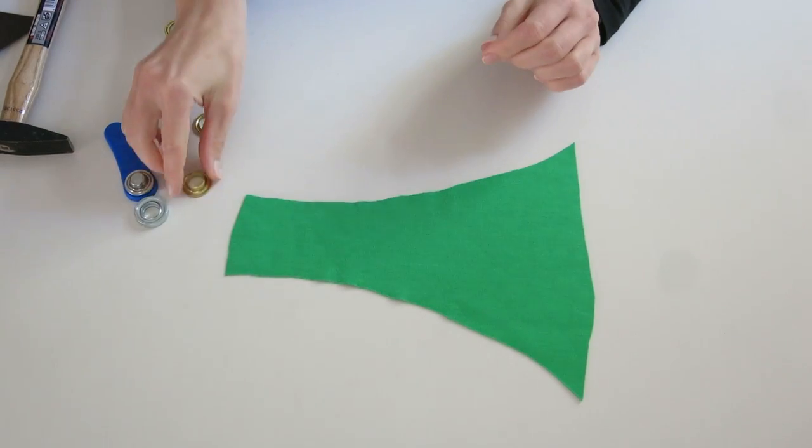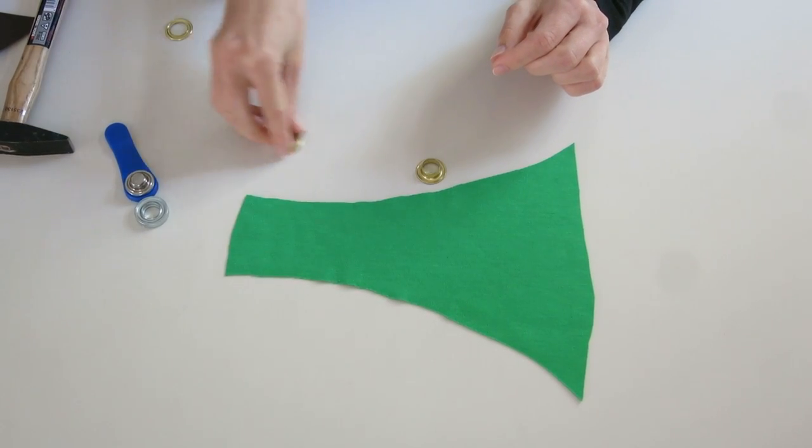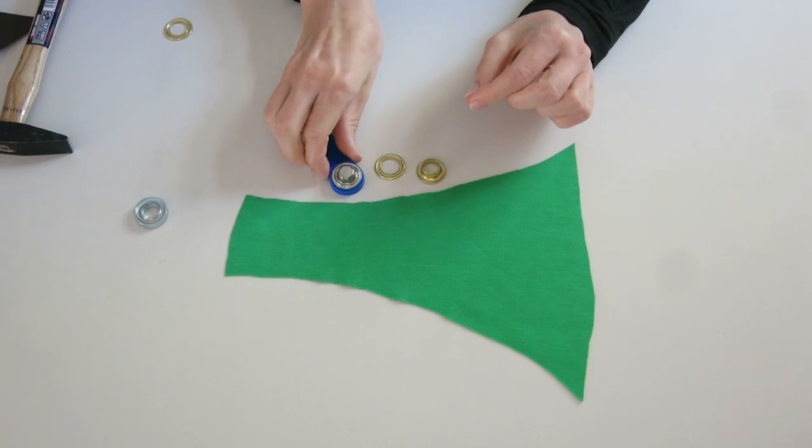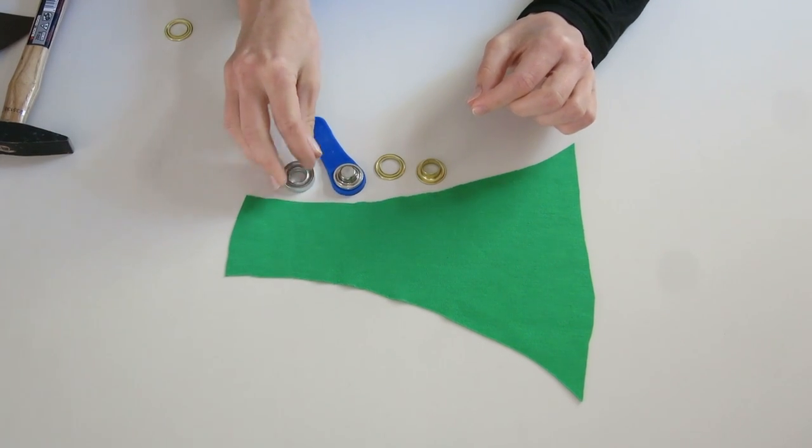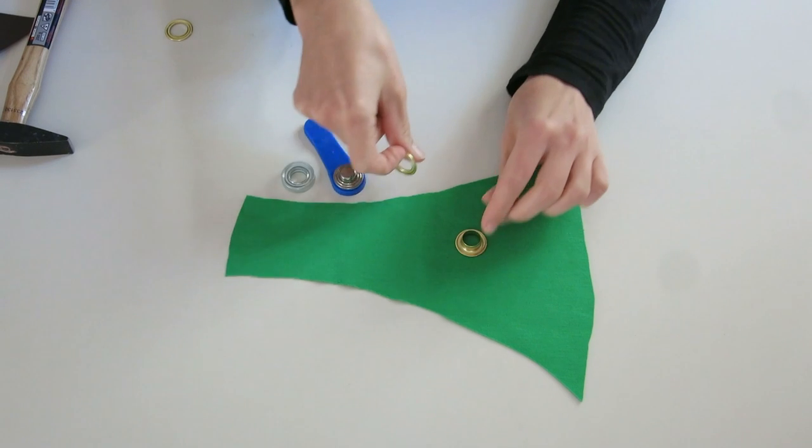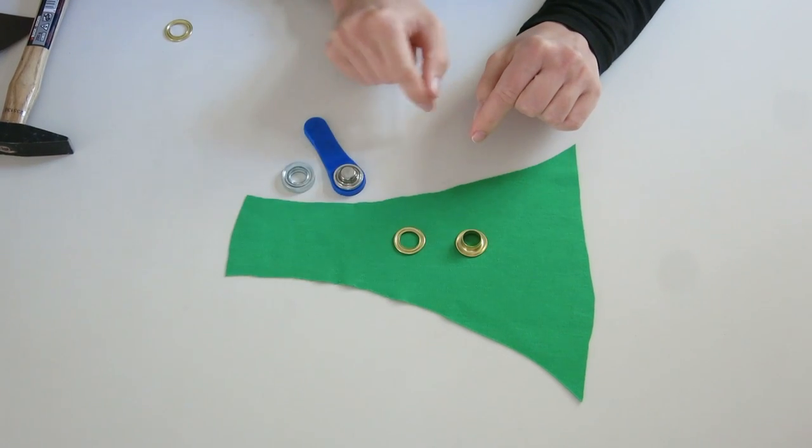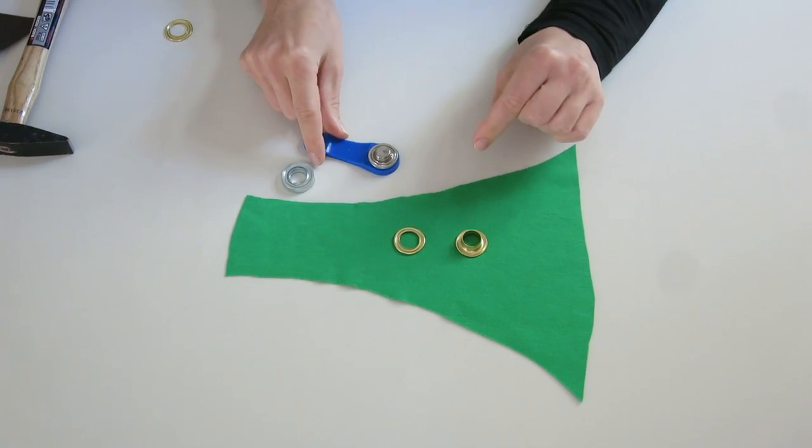If you buy the eyelets, they usually come together with an eyelet setting tool. The eyelets themselves are composed of two parts, the lower and the upper part, and you can basically decide which one you want to see on top of your fabric at the end.